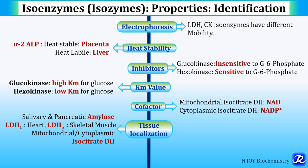The tissue localization is also different for different isoenzymes. For example, amylase has two isoenzymes — one present in the saliva (salivary amylase) and the other is pancreatic amylase. LDH1 is present in the heart, LDH5 in skeletal muscle, and isocitrate dehydrogenase has one isoenzyme in mitochondria and the other in the cytoplasm.